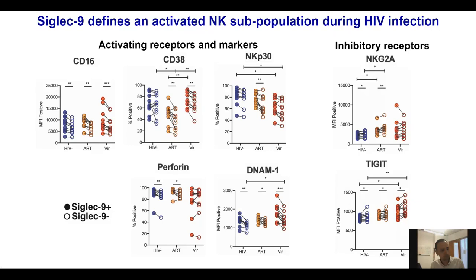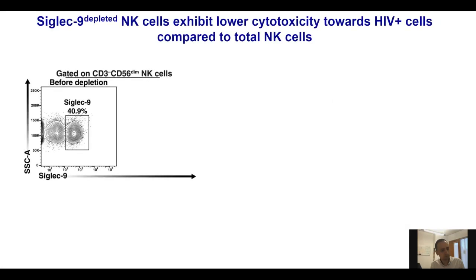So far, we know in vivo that these cells have an activated phenotype and exhibit a negative correlation with HIV, all suggesting that Siglec-9-positive NK cells are actually more activated and more cytotoxic against HIV-infected cells. This is not something very weird — classic immune negative checkpoints like PD-1 are usually expressed on highly activated, highly differentiated T cells that need to express PD-1 to restrain their high activation and cytotoxicity. We then wanted to directly explore whether Siglec-9-positive cells are indeed more cytotoxic against HIV-infected cells compared to Siglec-9-negative cells.